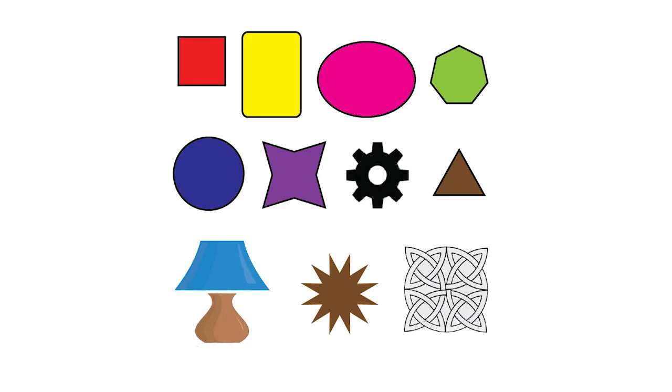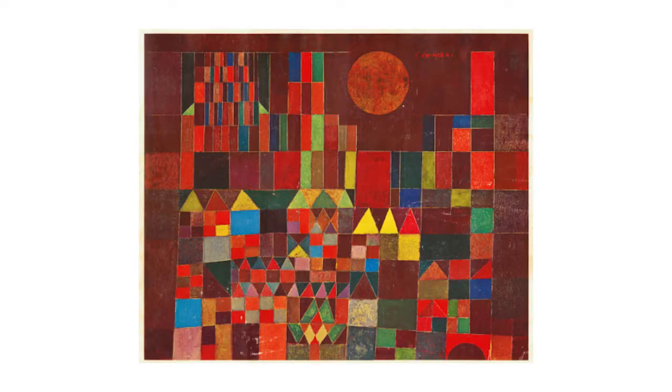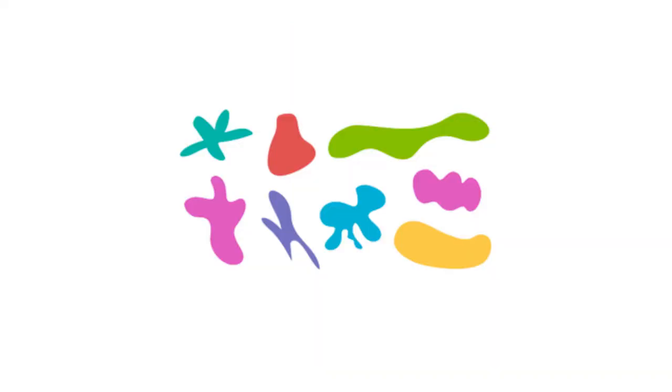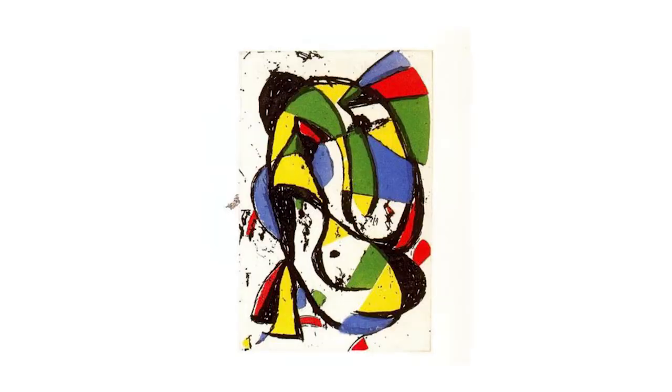Shapes can be geometric, like squares and circles. In this example by Paul Klee, Castle and Sun, he shows a variety of different kinds of geometric shapes—triangles, rectangles, squares, and circles. Or shapes can be organic, like free-form or natural shapes. In this example by Joan Miró, you can see a variety of different organic shapes that are created.